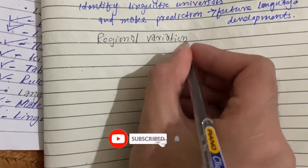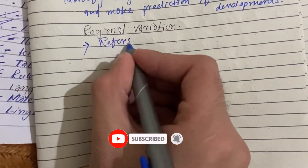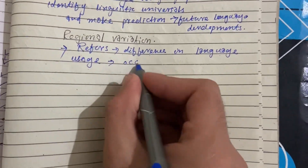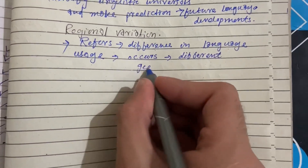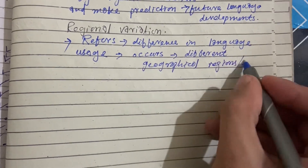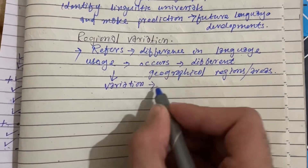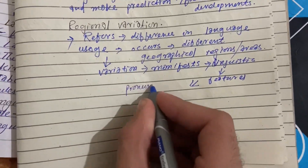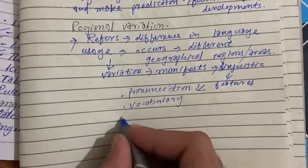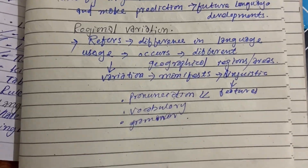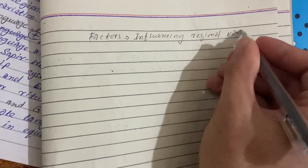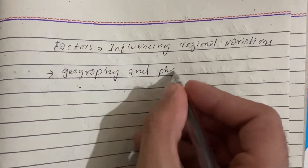Regional variation refers to the differences in language usage that occur across different geographical regions or areas. These variations can manifest in various linguistic features including pronunciation, vocabulary, and grammar, among others. There are several factors influencing regional variation, including geographical or physical barriers.